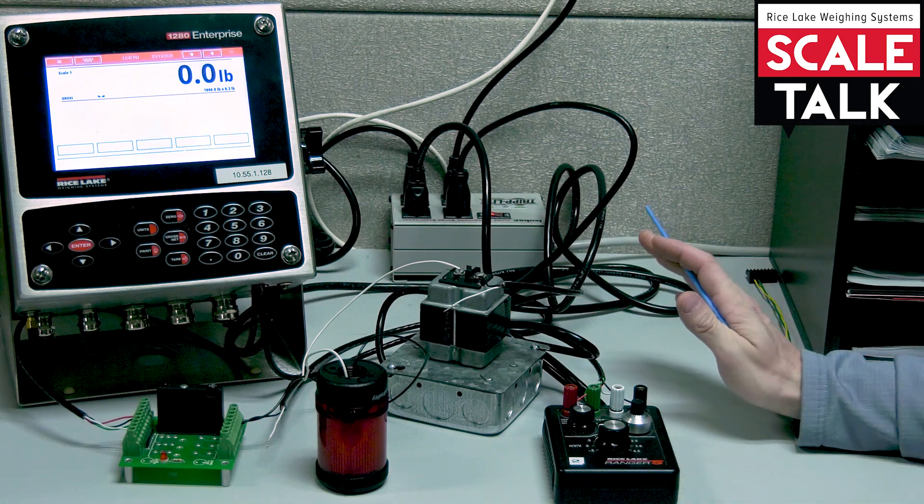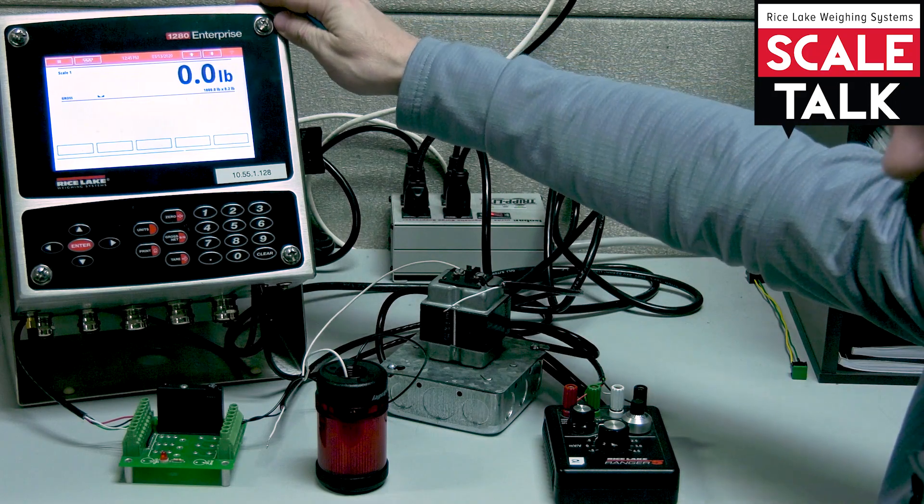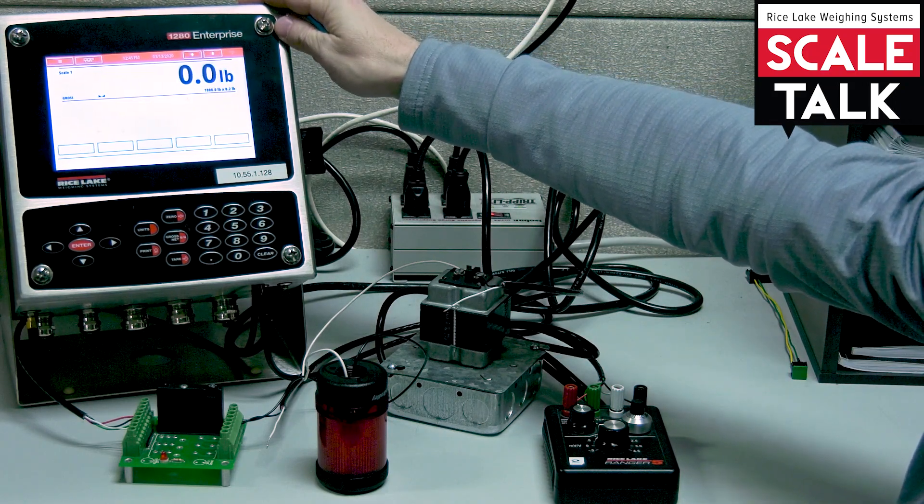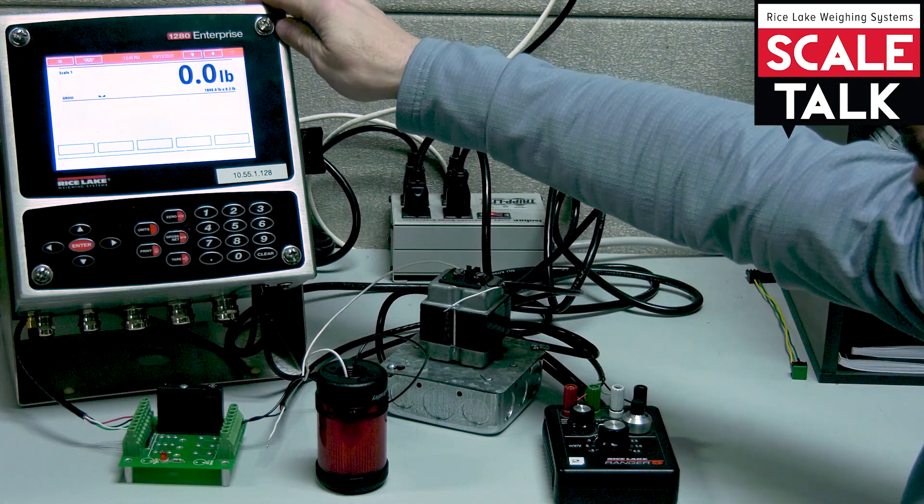To set the scene here, what we have is a 1280. We've already got this set up as a 1,000 pound scale counting in 0.2 pound increments.